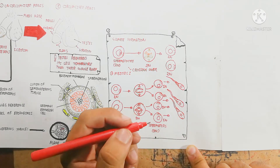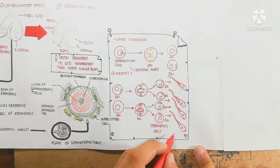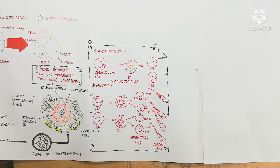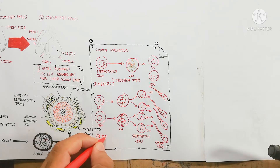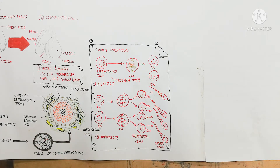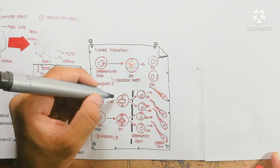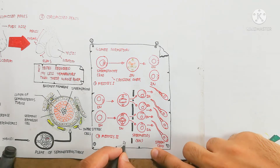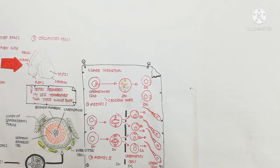One primary spermatocyte or one stem cell will produce four sperms, while in the case of the female, one cell produces one egg through polar body production — three cells become polar bodies, and one becomes the matured egg.